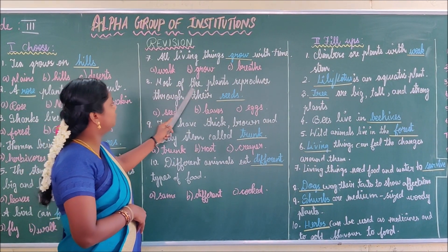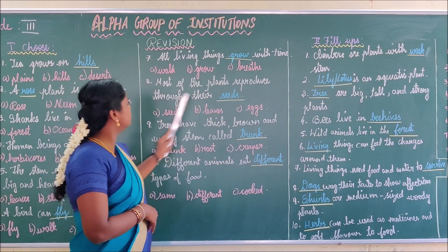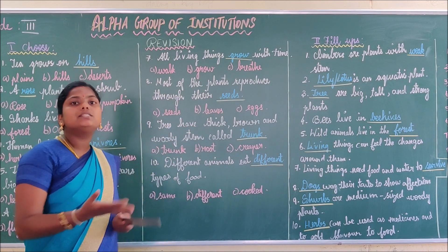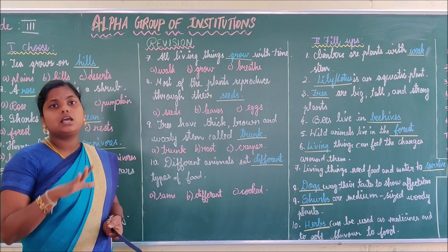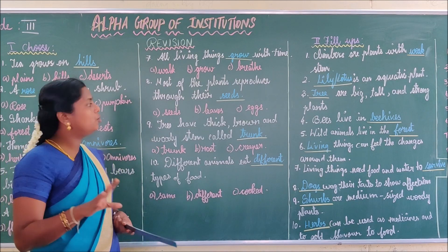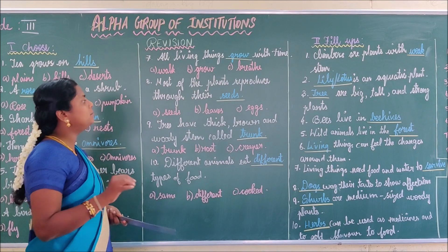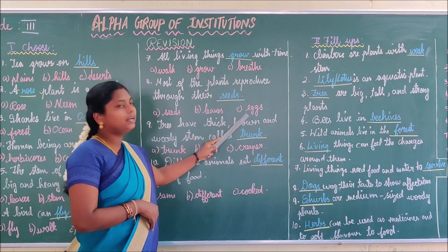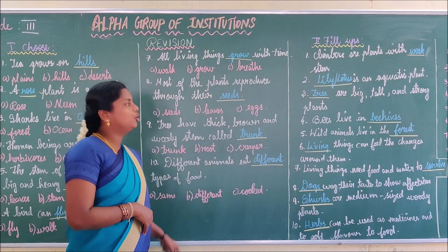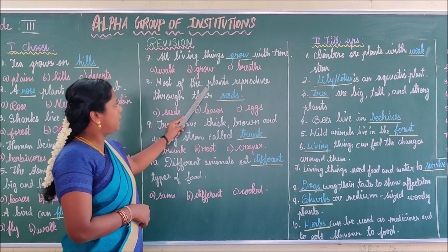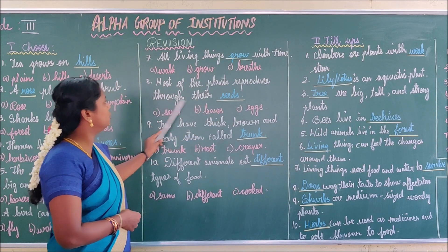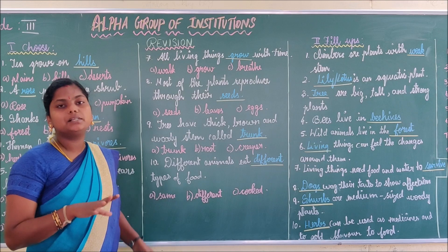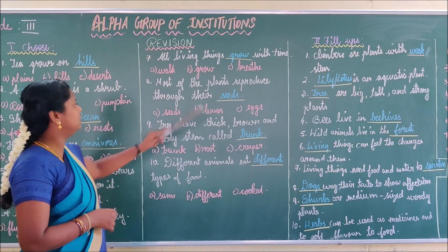Next question: Most of the plants reproduce through their blank. Plants reproduce in many ways, but most plants reproduce through seeds, leaves, or eggs. Most of the plants reproduce through their seeds.